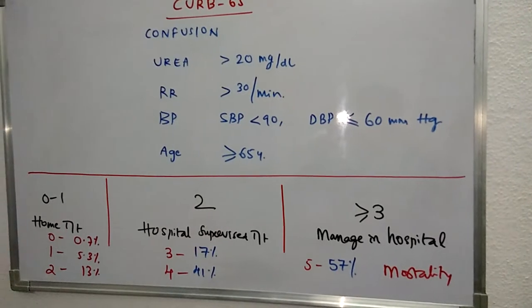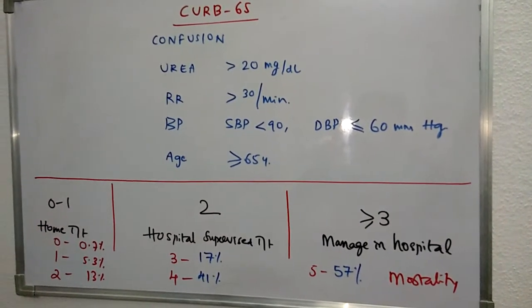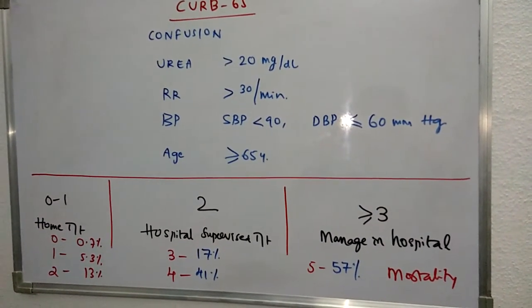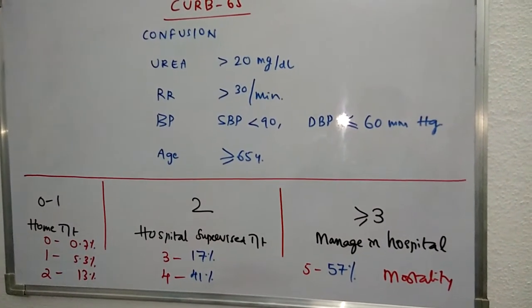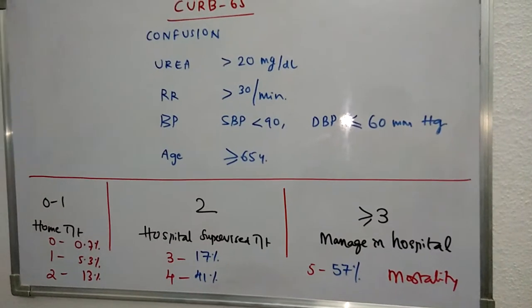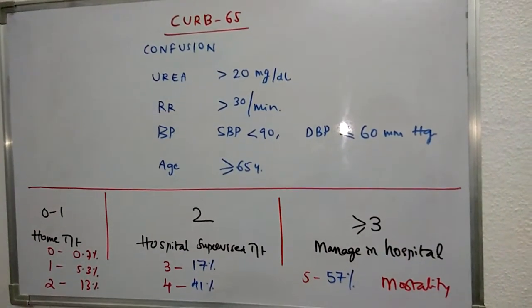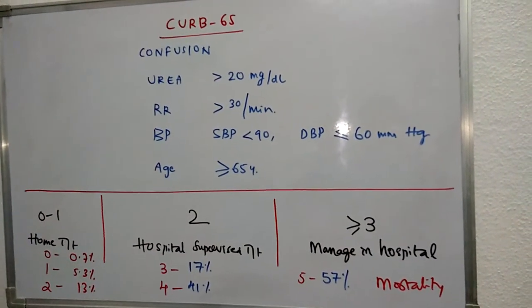The mortality percentages are: score 0 is 0.7%, score 1 is 5.3%, score 2 is 13%, score 3 is 17%, score 4 is 41%, and score 5 is 57%.